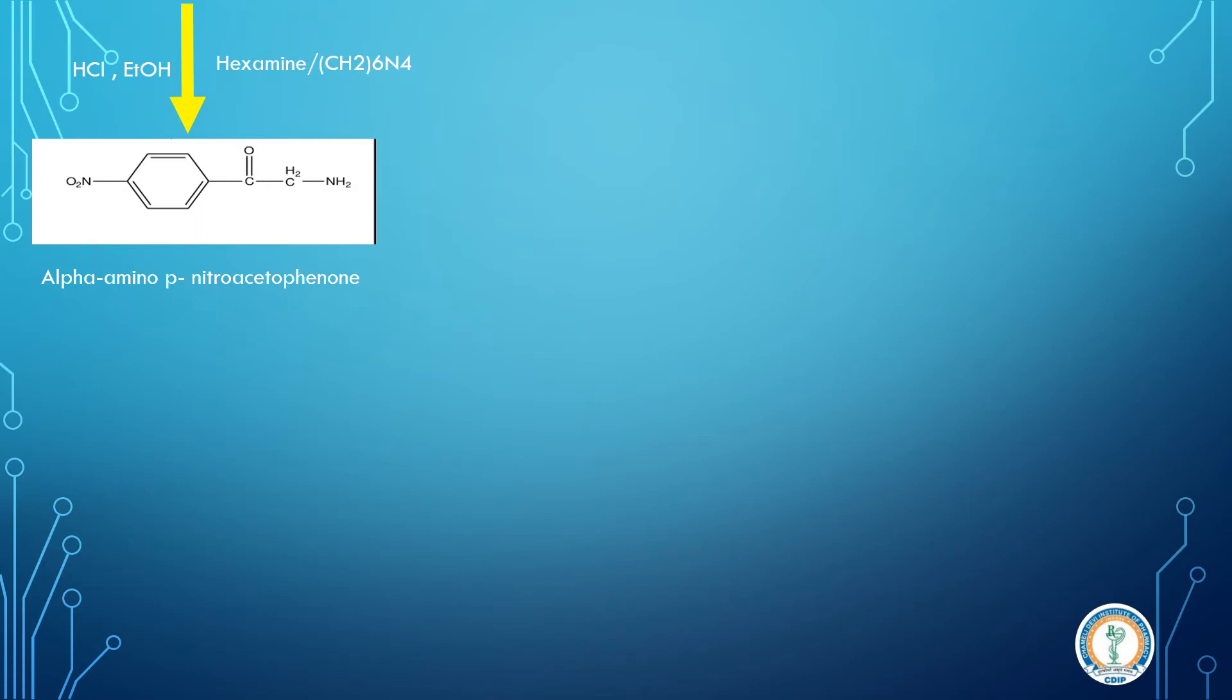So we get alpha-amino paranitroacetophenol. This is a new intermediate since alpha carbon is having amino group, so alpha-amino paranitroacetophenol.